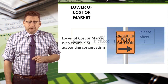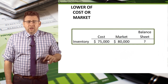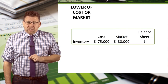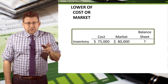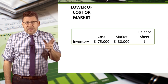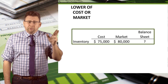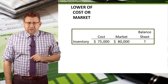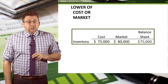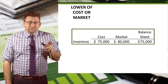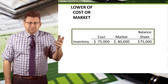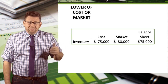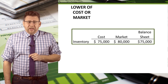Let's look at an example. The cost of inventory is $75,000. The market, which is determined by the inventory's current replacement value, is $80,000. So the lower of the two is cost. Therefore, inventory would be reported on the balance sheet at $75,000.